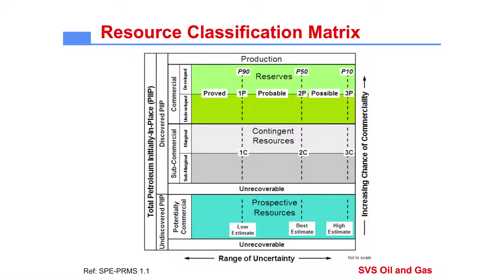As you can see on the right-hand side, there are three key elements. At the bottom level, you've got the prospective resources, and in the middle, you have contingent resources, and the top are reserves. All three are very distinct, and it's very important to discriminate and understand the disparity between each one.